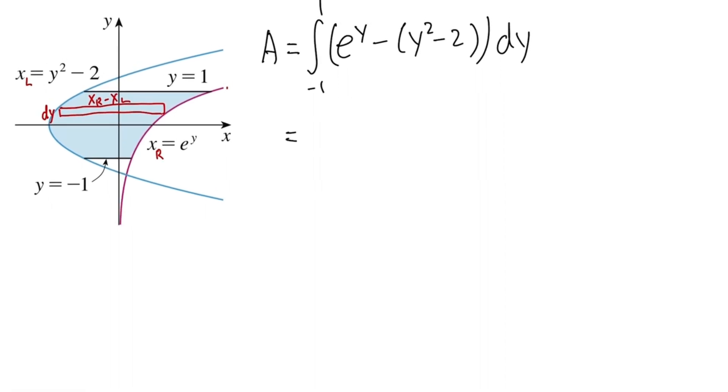Firstly, integrating e to the y is just going to be e to the y. And then minus the integral of this is 1 third y to the third power. Reverse power rule. And then don't forget to distribute the negative, so that will actually give us a positive. Integrating 2 in the y world, we get 2y. And then let's go ahead and plug in the numbers.